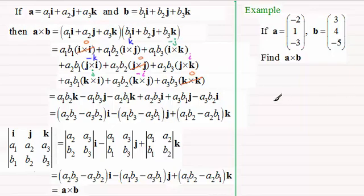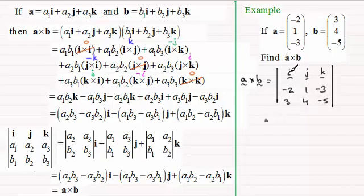So to find a cross b let's just put this up here a crossed with b. Then we set up our determinant with i j and k across the top here and then we've got the components of a minus 2, 1, minus 3 and then for b we've got 3, 4, minus 5. Okay so in the usual way then following this method here what we're going to get is equal to i times the determinant 1 minus 3, 4 minus 5.